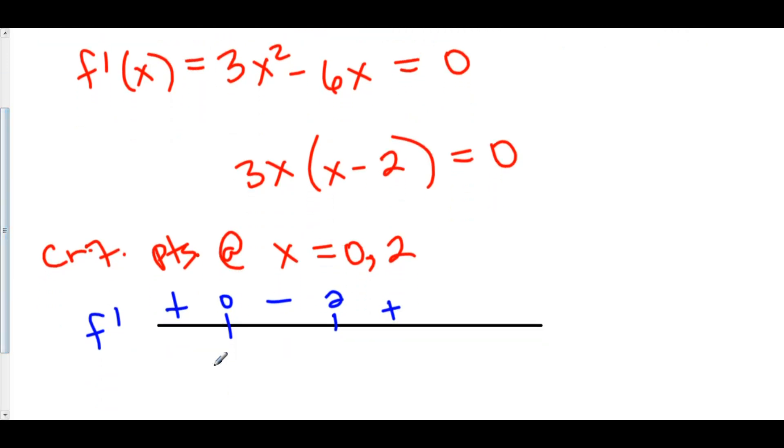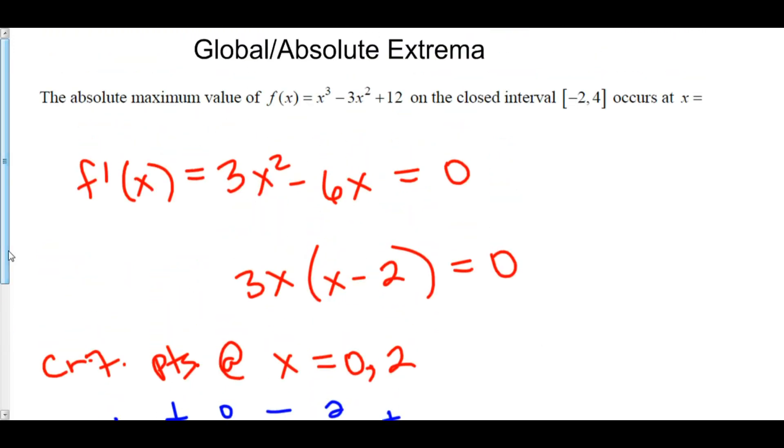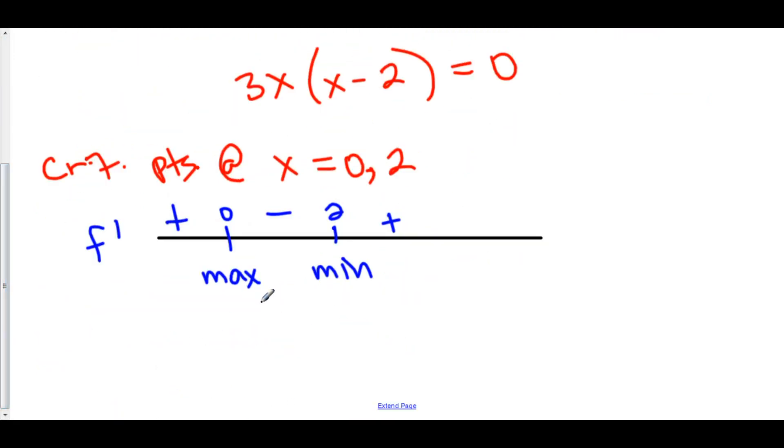This means that we have a relative maximum at x = 0 and a relative minimum at x = 2. Now, the question is asking us for the absolute maximum value on this closed interval. So there are actually only 3 points that we have to check. We can get rid of 2 because that's a minimum. That doesn't matter to us, we want to find the maximum values.